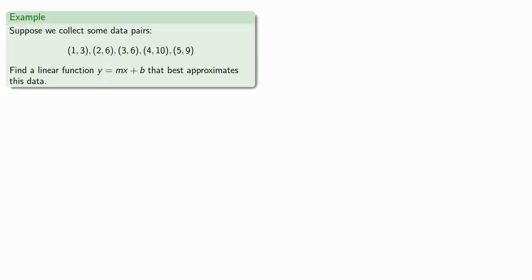So let's try it out. Suppose we collect some data pairs. And we want to find a linear function y equals mx plus b that best approximates this data. So our input values are going to be 1, 2, 3, 4, and 5. And our corresponding observed output values are going to be 3, 6, 6, 10, and 9.